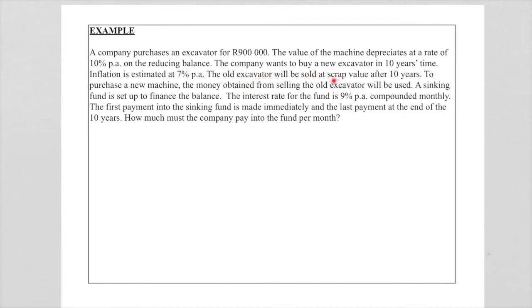Inflation is estimated at 7% per annum. The old excavator will be sold as scrap after 10 years. To purchase a new machine, the money obtained from selling the old excavator will be used, and a sinking fund is set up to finance the balance. The interest rate for the fund is 9% per annum compounded monthly. The first payment into the sinking fund is made immediately, and the last payment is at the end of the 10 years. How much must the company pay into the sinking fund per month?